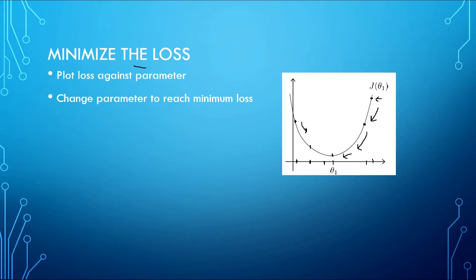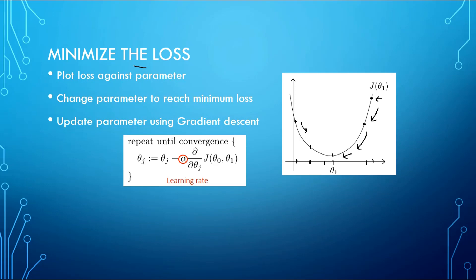We update the parameters using an algorithm named gradient descent, given by the following mathematical equation. The parameters theta are updated by subtracting a term from the old value of theta. In this term, we take the partial derivative of our cost function with respect to theta and multiply it with a constant alpha. This alpha is named as the learning rate and describes the size of the step we take to update our parameter.